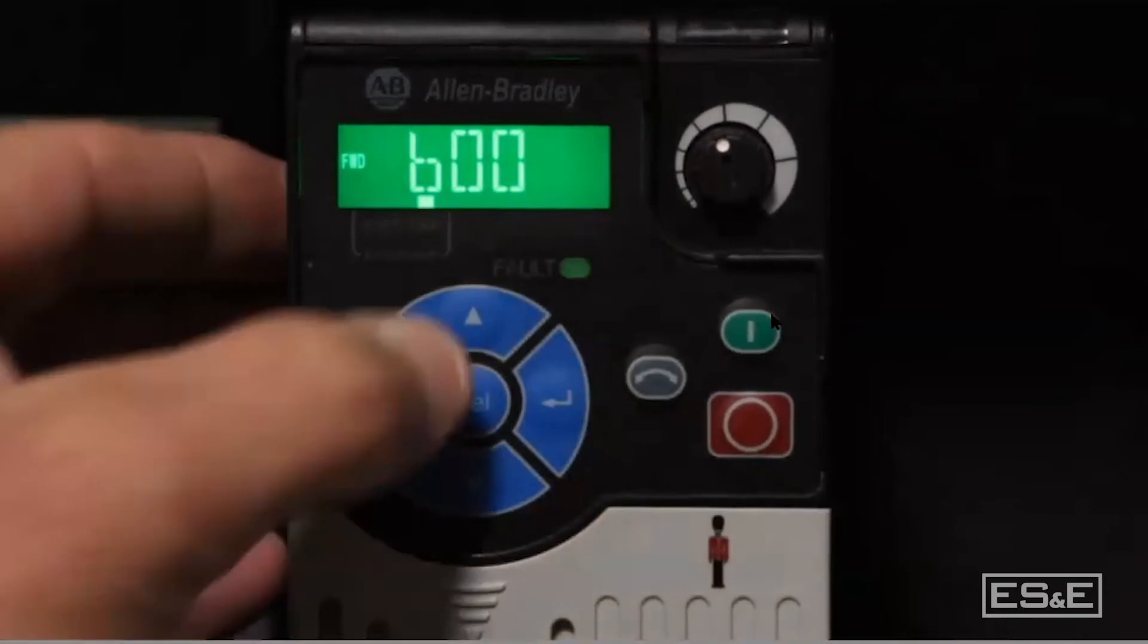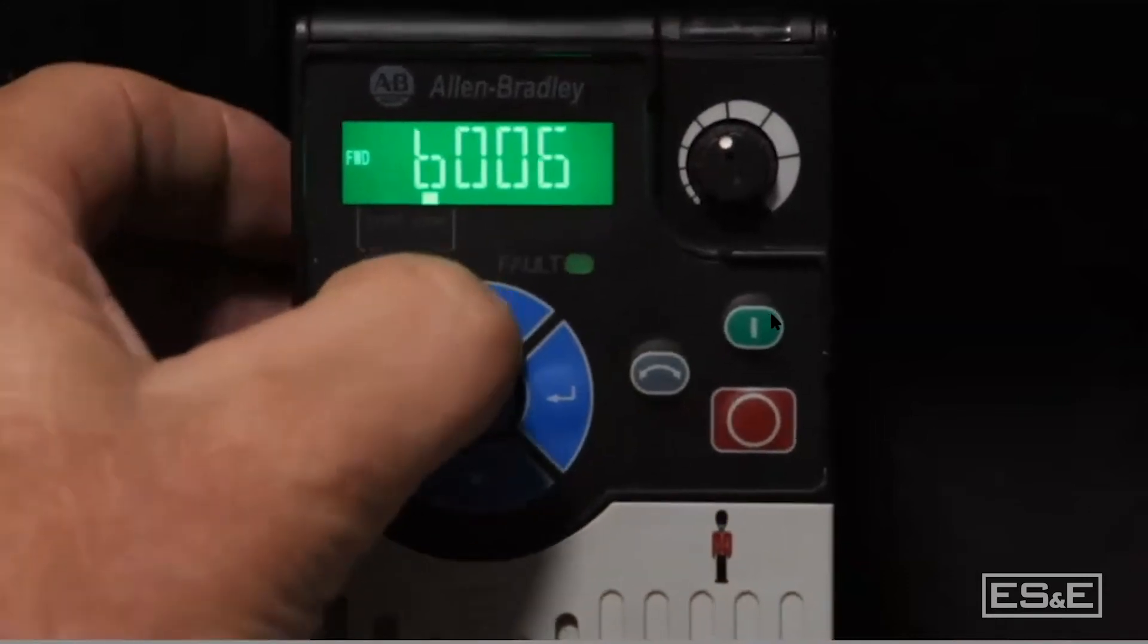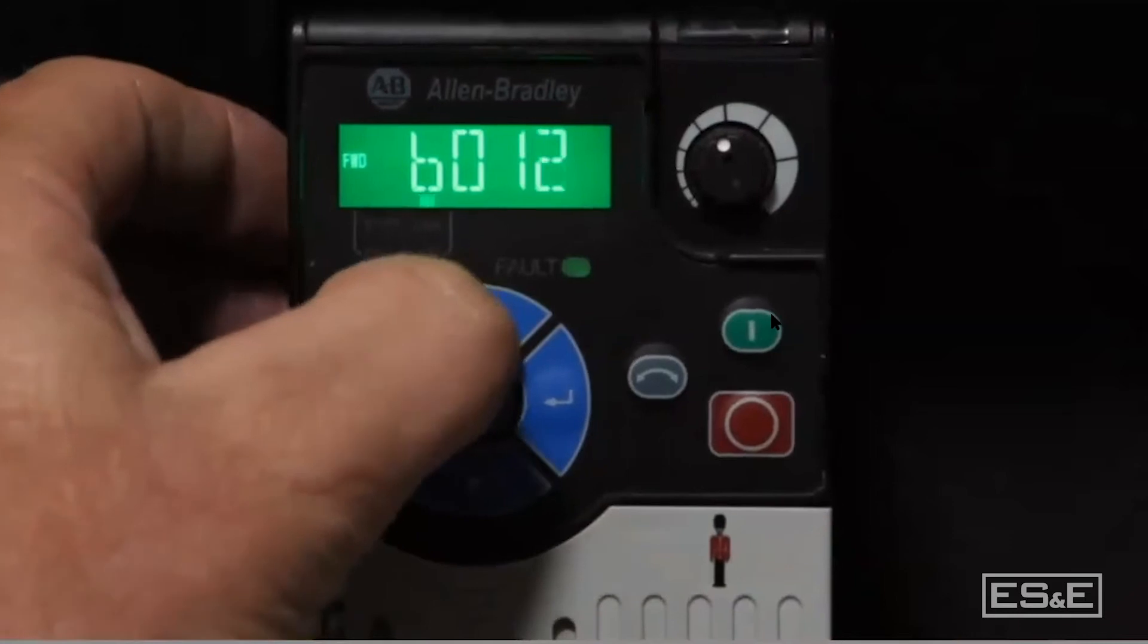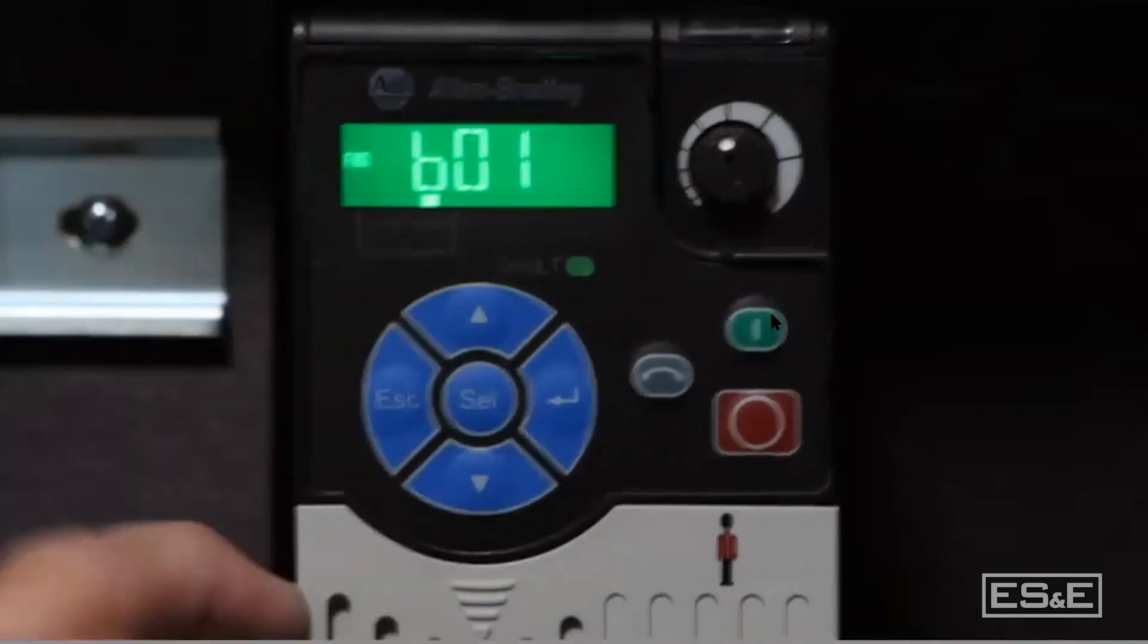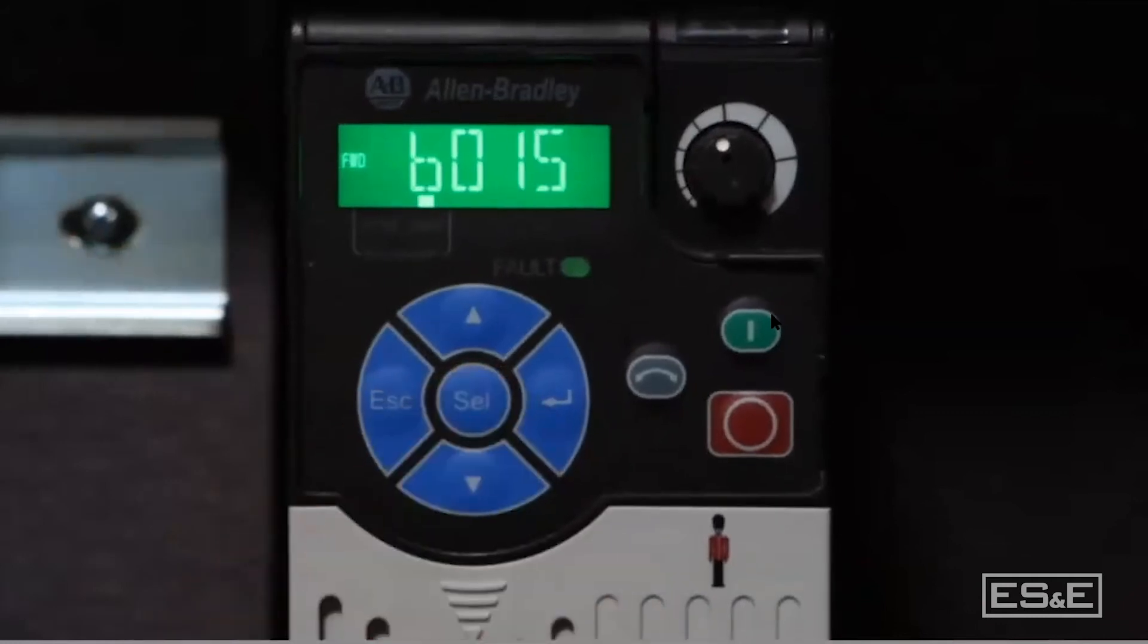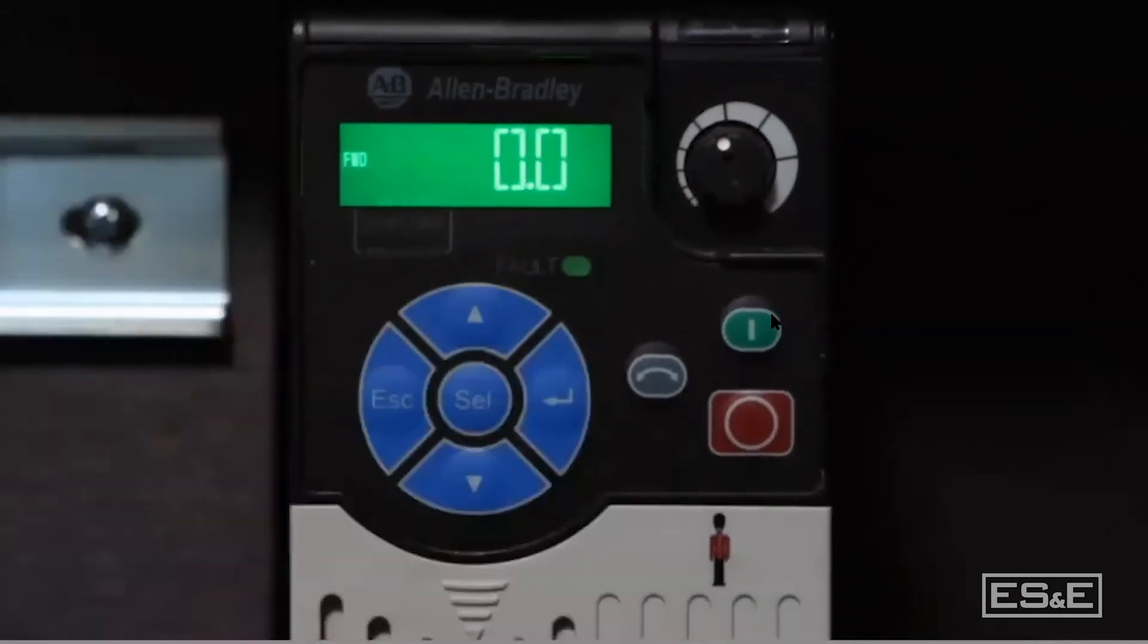I can go up this way to go to parameters one through nine, or I can keep scrolling up. But if I wanted to go to parameter 25, I could just simply hit select here and go up and hit enter. Now I'm at parameter 25.